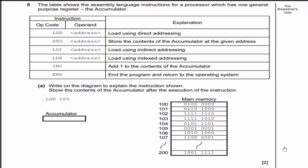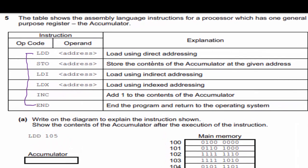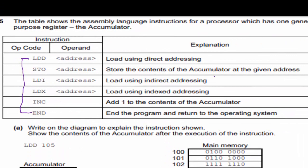This first one is from a past paper exam. Here they have not been very descriptive with the op code. LDD means load using direct addressing. LDI means load using indirect addressing. LDX means load using indexed addressing. We'll be going over all of those today.